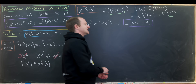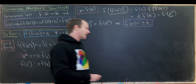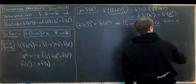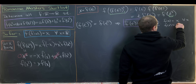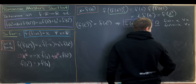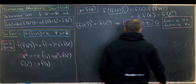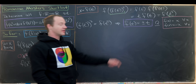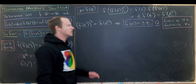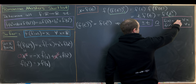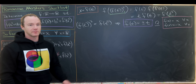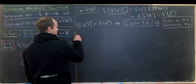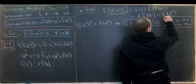Knowing f(t) = ±t points us toward two obvious candidate solutions: f(x) = x for all x, or f(x) = -x for all x. But we haven't yet shown that f can't mix — outputting +t for some inputs and -t for others. Showing that is the last thing to prove, and we'll do it by contradiction.